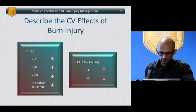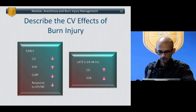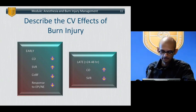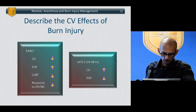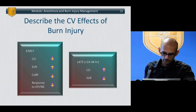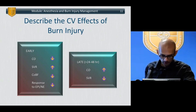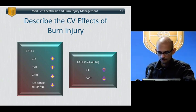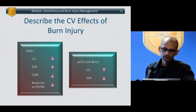Cardiovascular effects of burn injury: early in burn injury, cardiac output decreases, SVR increases, coronary blood flow decreases, and the response to intravenously administered epinephrine and norepinephrine decreases. Late in burn injury — greater than 24 to 48 hours — cardiac output tends to increase and SVR tends to drop. So early, within the first 24 hours, your patient behaves as though significantly hypovolemic: high SVR, low cardiac output. After 24 to 48 hours, they behave like they're septic — very low global SVR with a high cardiac output state.